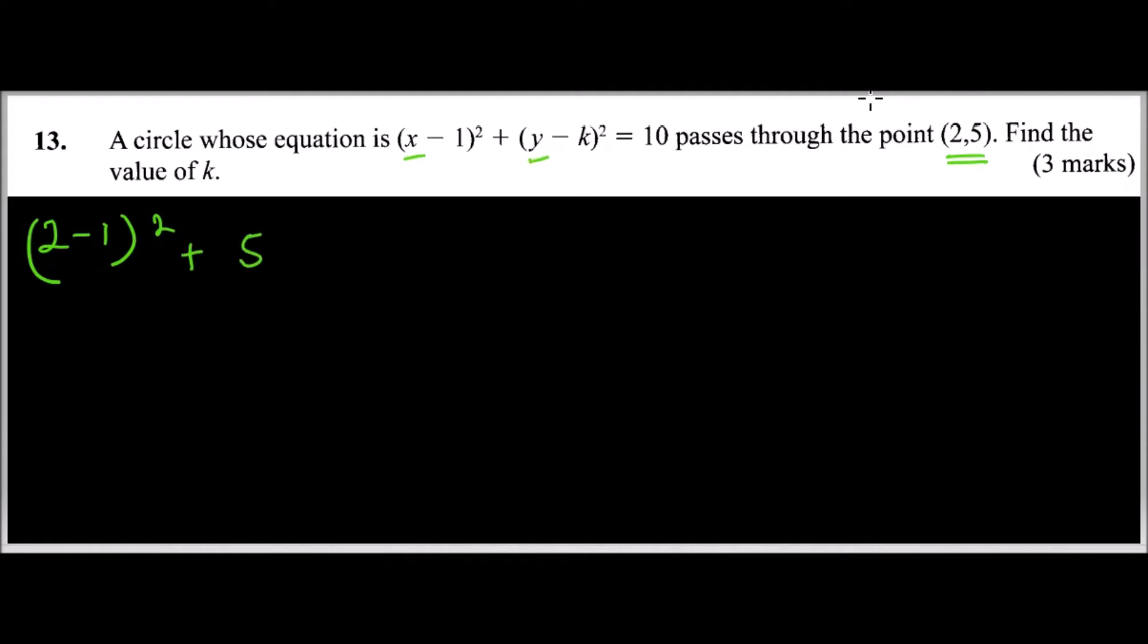With that, 2 minus 1 is 1, 1 squared is the same as 1, plus when you expand this that will give you 25 minus 10k plus k². You did that in Form 2. This equals 10.